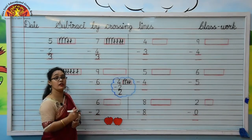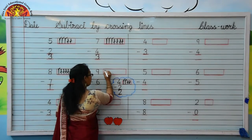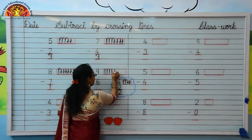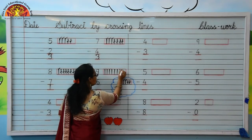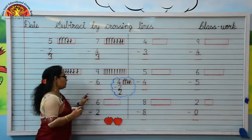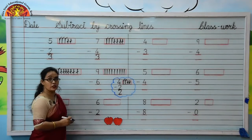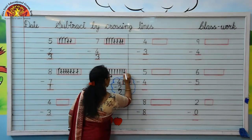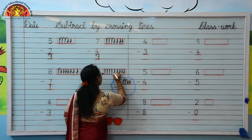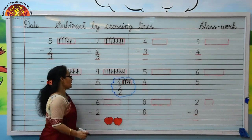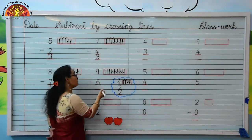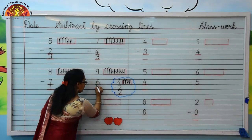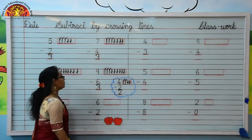Next number is 9. Let's draw 9 lines: 1, 2, 3, 4, 5, 6, 7, 8, 9. The downside number is 6. Kids, we will cross 6 lines from 9 lines. Let's cross them: 1, 2, 3, 4, 5, 6. Now you tell me how many lines are left. Let's count: 1, 2, 3. So kids, write 3 like this. Move to next.